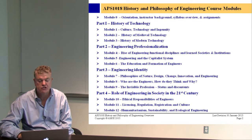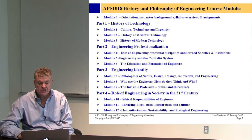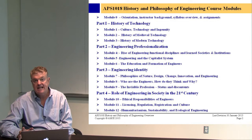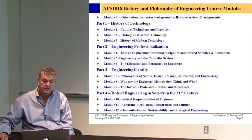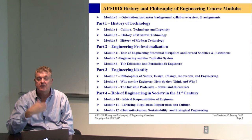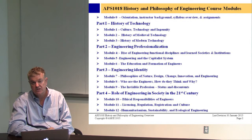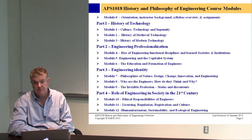Theme one is the history of technology, covering the first three weeks of the course. Module one discusses culture, technology and ingenuity — often called engineering. Module two covers the history of medieval technology from the end of the Roman Empire to the 14th and 15th century. Module three covers the history of modern technology. The whole purpose is to understand the impact of technology in society, socially and culturally. We'll realize that technology shapes culture as well as culture shaping technology — often called technological determinism.